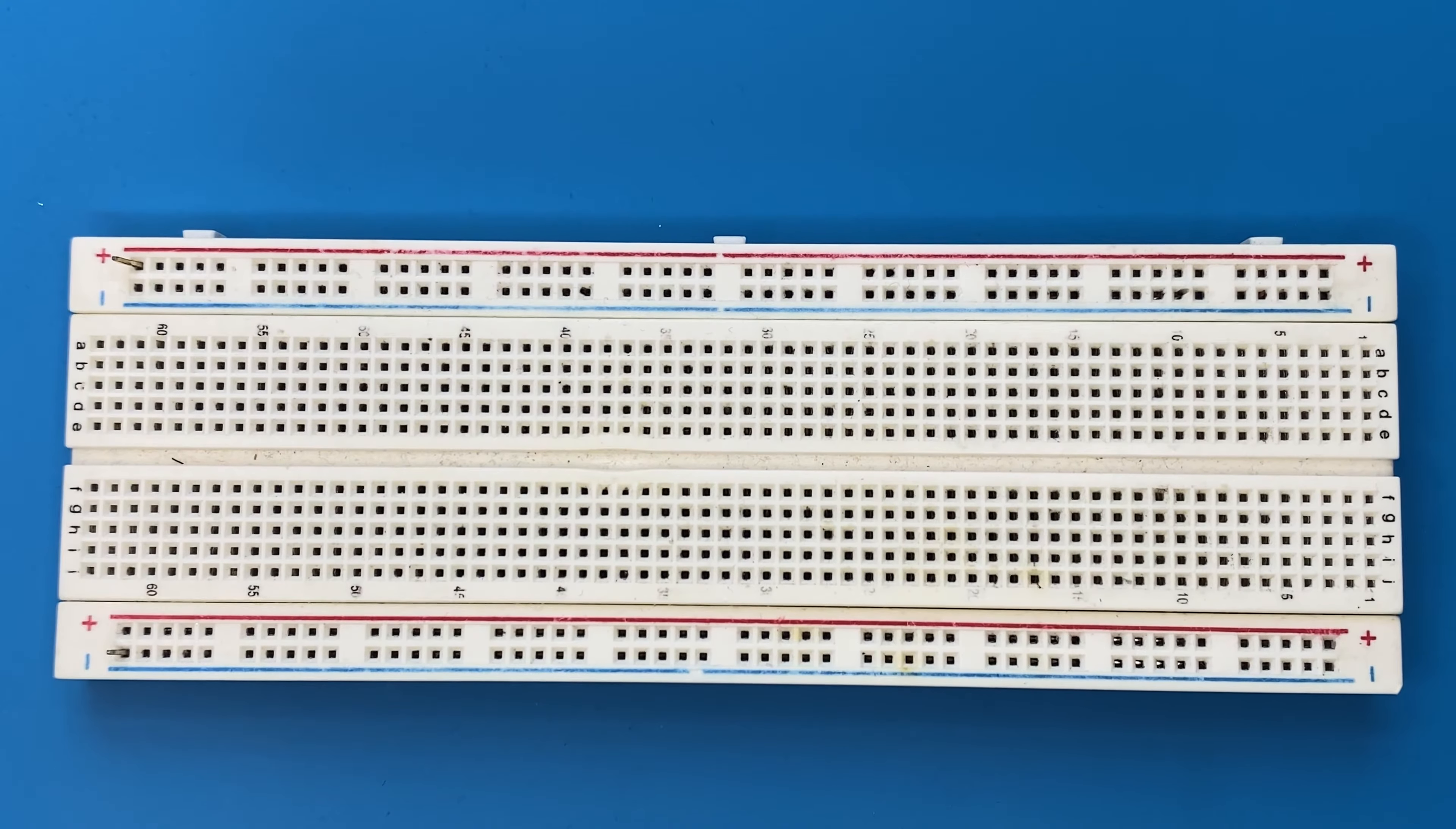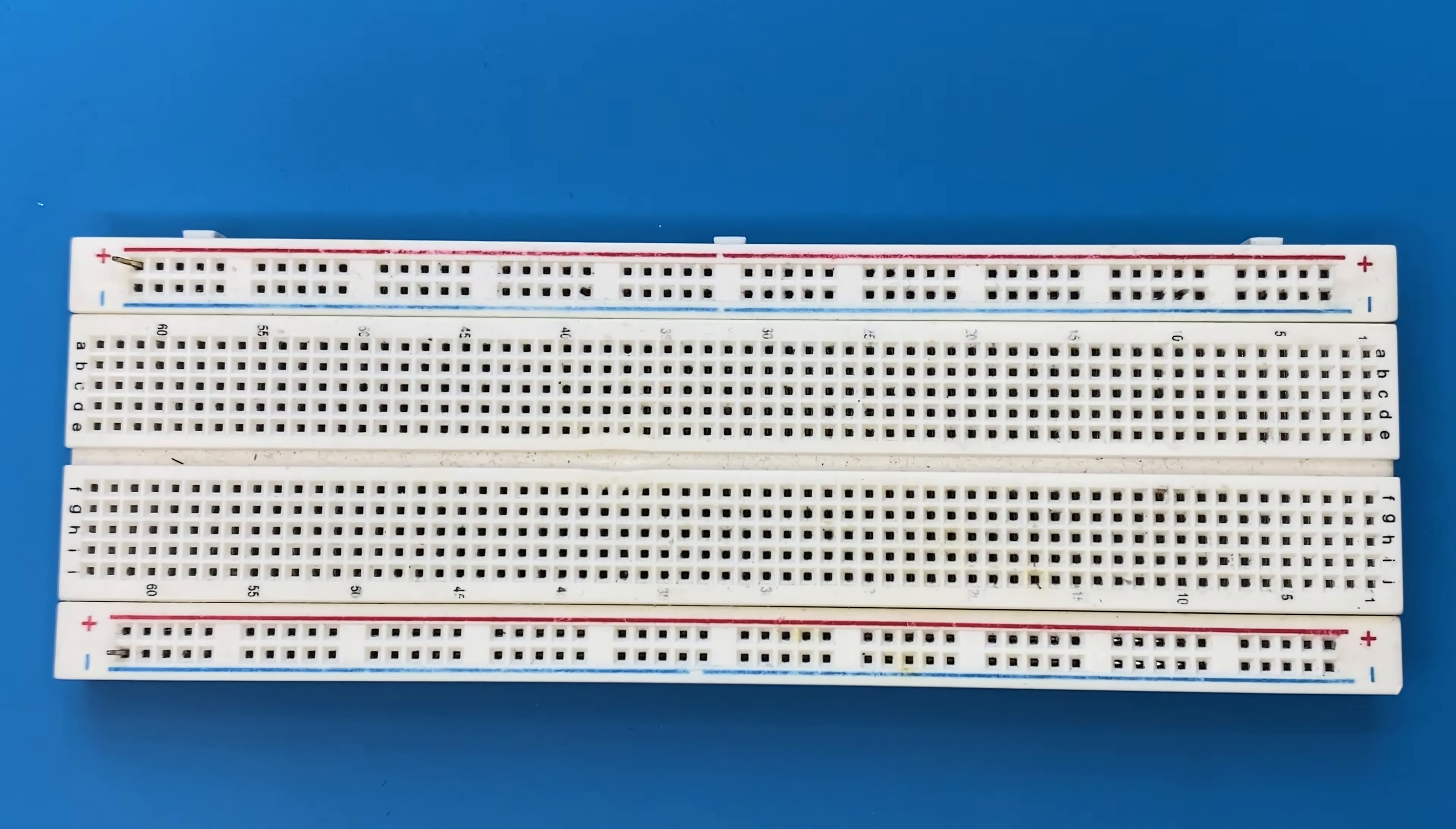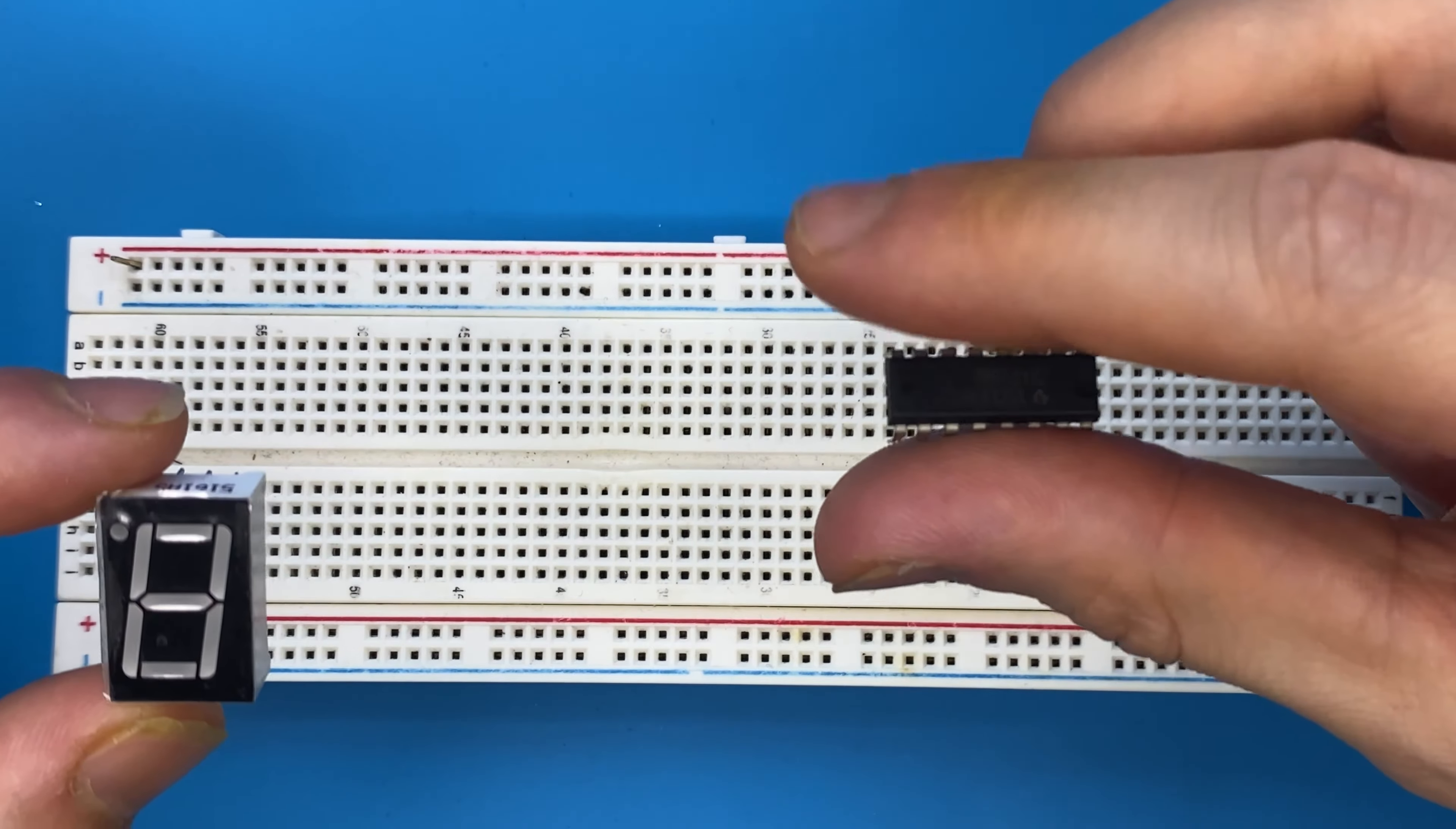I'm going to divide the project into two circuits. The first one is going to be an LED flashing circuit using a 555 timer IC, and the next one is going to be a 7-segment display along with the 4026 IC.